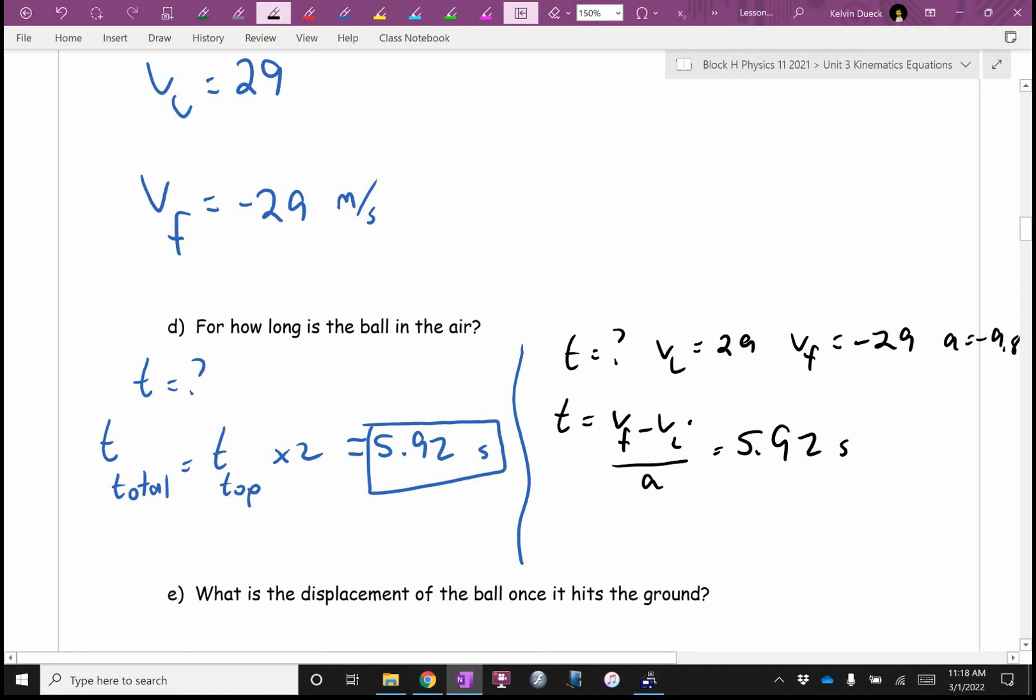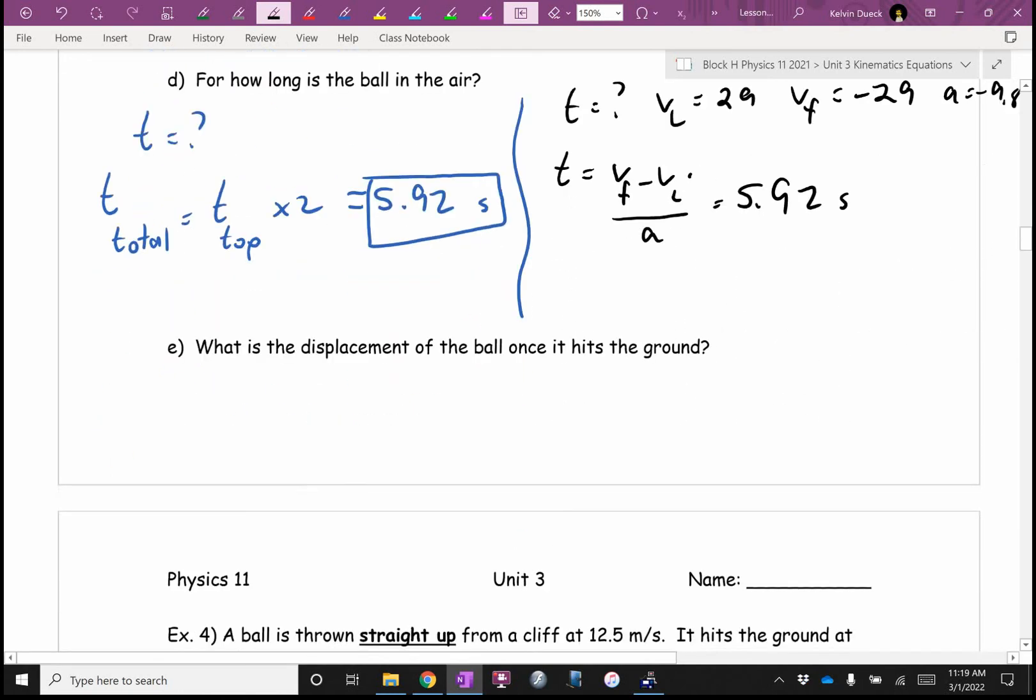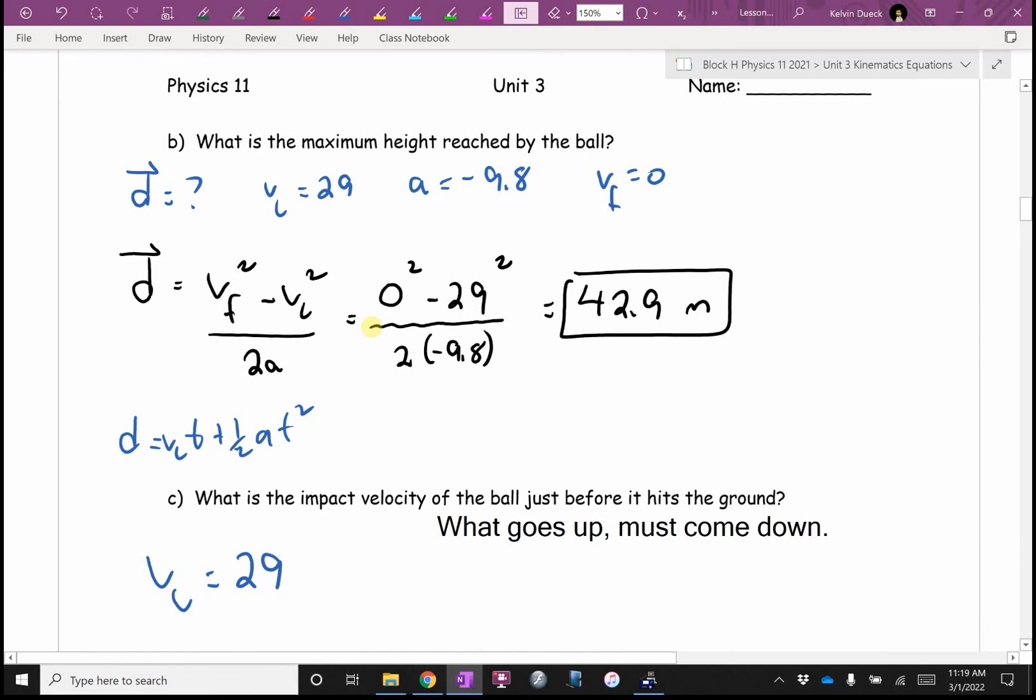So one question I might give you, we'll throw something in the air, and I'll just ask you to find the total time of flight. And that's what we call this, the flight time, the total time of flight. What's the displacement of the ball once it hits the ground? Casey, what? On a roll. Zero.